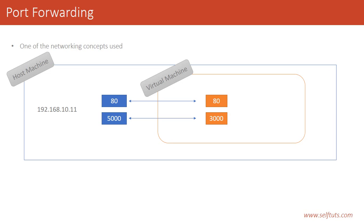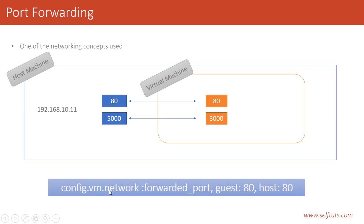You must be wondering how to do port forwarding in our Vagrant machine. Inside our Vagrantfile, we need to add the setting config.vm.network with forwarded_port, where guest is 80 and host is 80. Guest always means the virtual machine and host means the Windows machine. This configuration says that port 80 of the host machine is forwarded to port 80 of the guest machine.